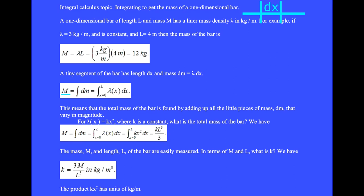The total mass of the bar M is found by adding up all the little pieces of mass dm that vary in magnitude as a function of x. Integrating lambda dx from x equals 0 to L will give us the total mass.